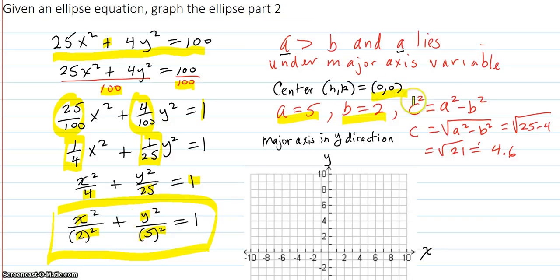The only thing left to find is the c for the foci. You have this defining relationship. And c equals the square root there, which is the square root of a squared minus b squared. That's 25 minus 2 squared, which is 4. 25 minus 4 is 21, and the square root of that is approximately 4.6.